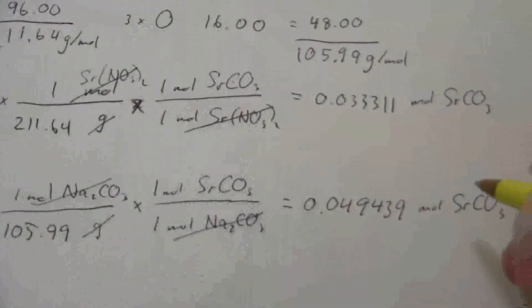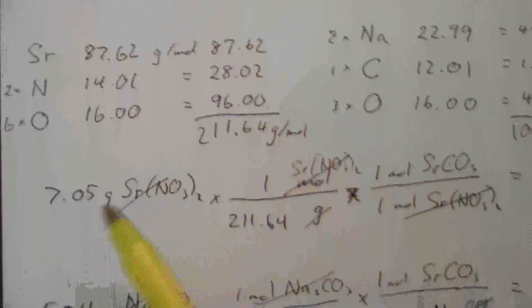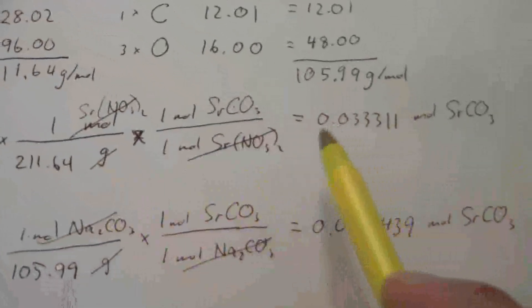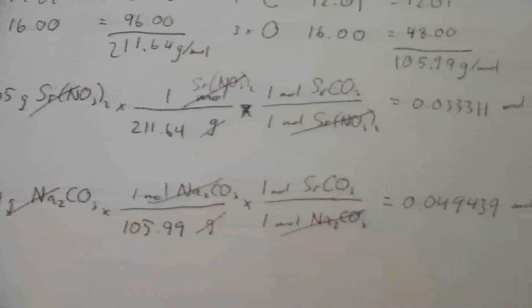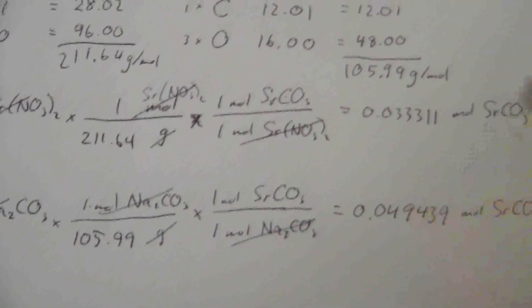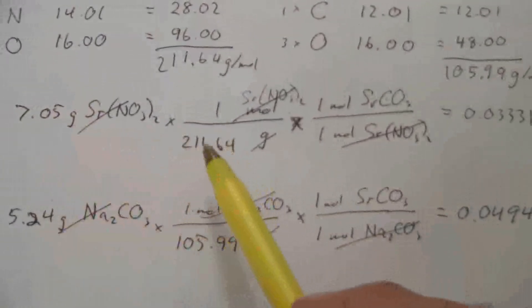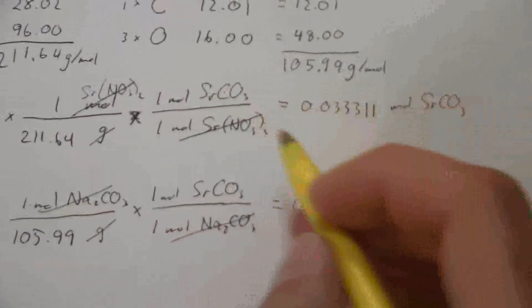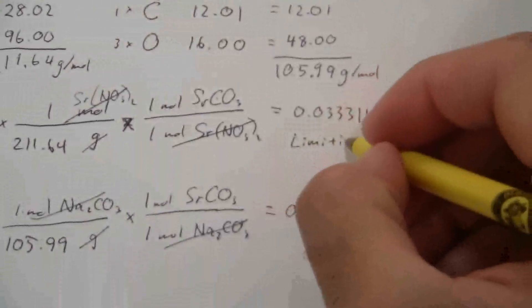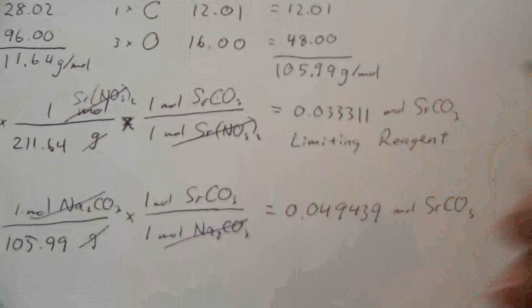So what we find here, you look at these and you say, this first one, my 7.05 grams of strontium nitrate, it actually gets used up first. In other words, it can't produce as much of the strontium carbonate as if I were able to react all of the 5.24 grams of sodium carbonate. If all of this one were reacted, I could get 0.05 moles, just about. Whereas this one, I could only get 0.03 moles. So, even though this original number was larger, because it's much heavier, I have fewer moles, and so I can't produce as much of the product. So this limits how much of the product I can form. So this is my limiting reagent, also known as a limiting reactant.